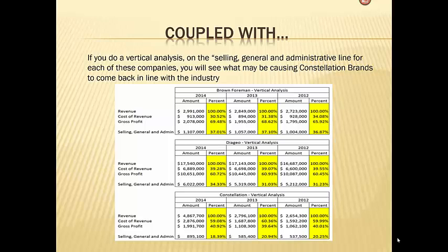If you do a vertical analysis on all of these companies you will see that cost of revenue for Brown Foreman and Diageo is around 30 to 40 percent — they're very comparable — and their selling and admin is about the same, around 35–36 percent. But Constellation Brands is quite opposite: their cost of revenue is higher and their selling, general and administrative expense is a little lower, which is good. But they still only keep about $0.12 of net income where the other two companies keep about $0.20, which is much better.